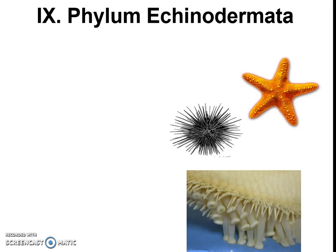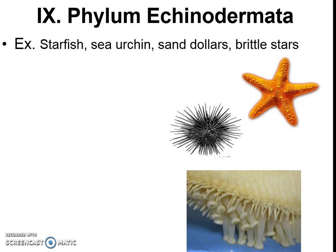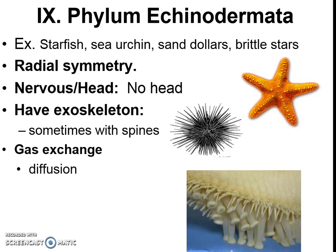Here's our last phylum for this set of notes: echinoderms. I usually think of sea stars, sand dollars, or starfish. They have radial symmetry — back to radial — which kind of seems like we're going backwards a little bit. They don't have a head. They do have an exoskeleton, sometimes even spiny ones — you don't want to step on a sea urchin. And they don't really have a lot of complex gas exchange. So again, it feels a bit like we're going backwards.